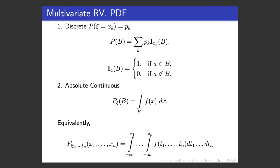In the continuous case, it's straightforward: if we can represent our cumulative distribution function as the integral of another function, then this function is called the probability density function.